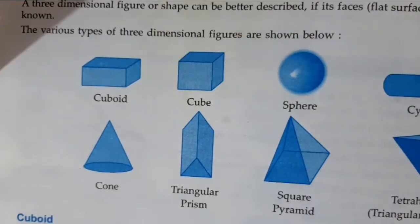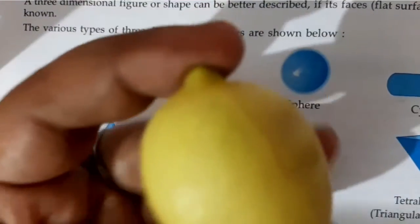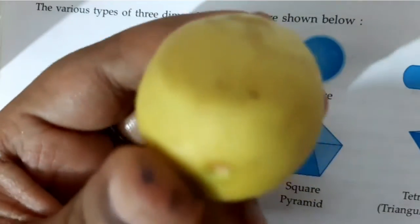Now I take another example of this lemon. This lemon, you can see, it is a sphere. It is a sphere. And it has no, a lemon has no edges. You cannot see any edges here. It has no vertices.